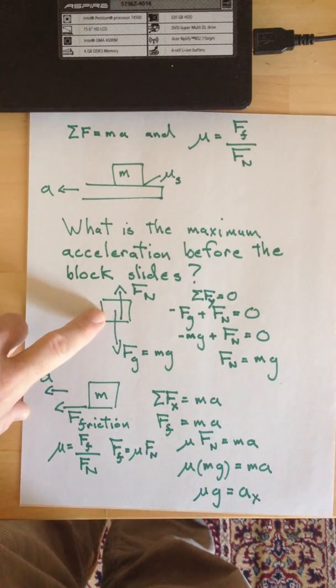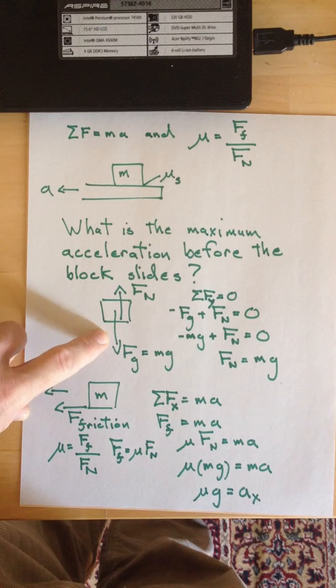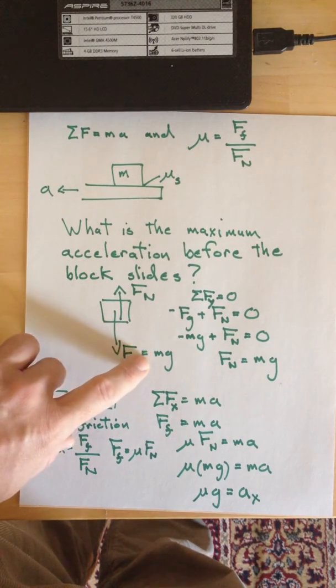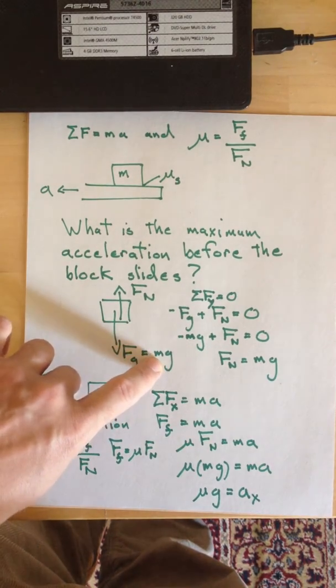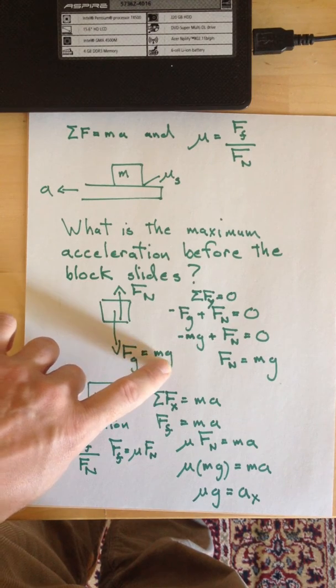So we actually start in the vertical direction. There are two vertical forces. The weight pulls down. That's mass times the acceleration due to gravity. So one kilo weighs about 10 newtons, and the normal pushes up from the surface.